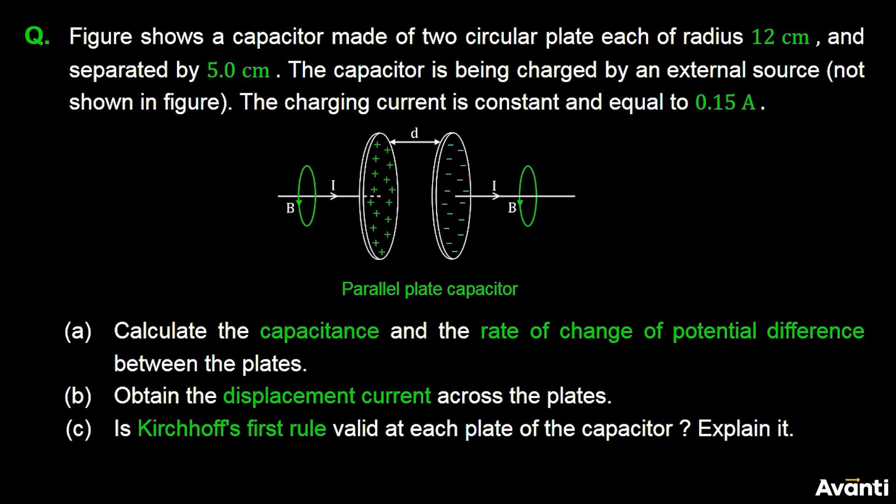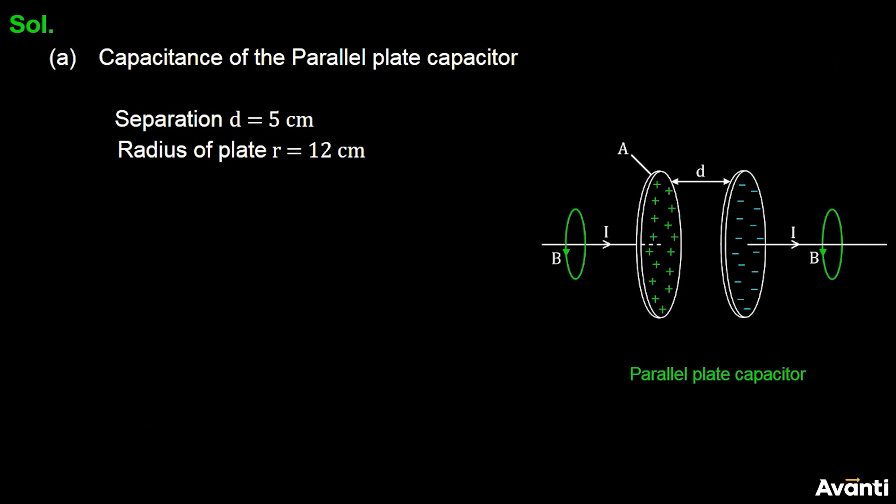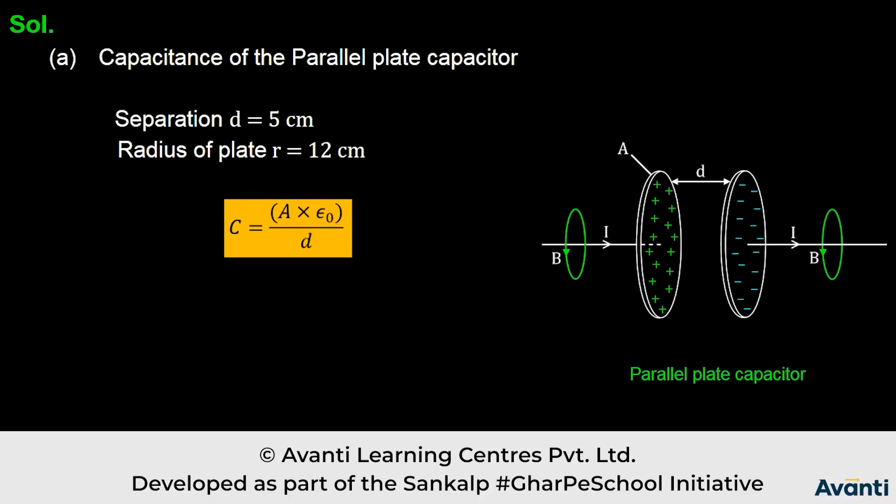We have to calculate the capacitance. Plate of radius r, we have area, we have separation D, and epsilon 0 is constant. Capacitance is epsilon 0 by D, area is pi r square and separation.